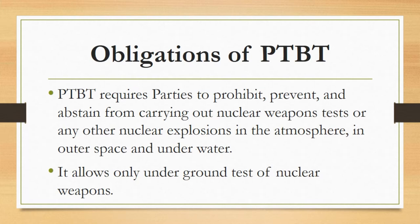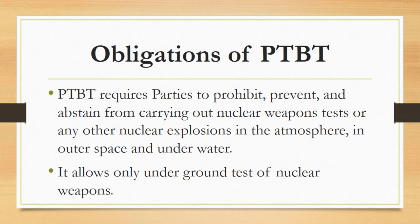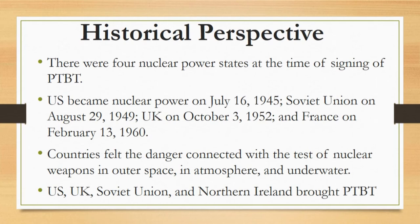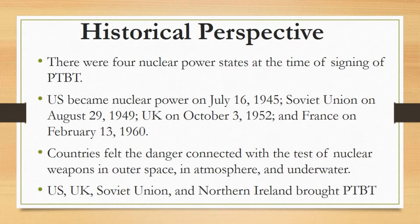Now, what are the obligations of PTBT? This treaty requires parties to prohibit, prevent, and abstain from carrying out nuclear weapons tests or any other nuclear explosions in the atmosphere, in outer space, underwater, or in any other environment if such explosions cause radioactive debris to be present outside the territorial limits of the state conducting the explosion. It also requires parties to refrain from causing, encouraging, or in any way participating in any nuclear weapon test explosion anywhere in those environments. It allowed countries to test nuclear weapons only underground.